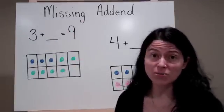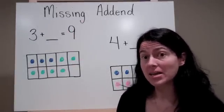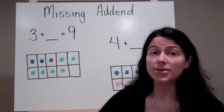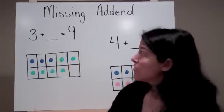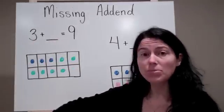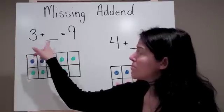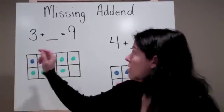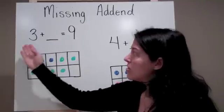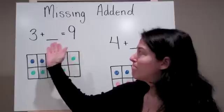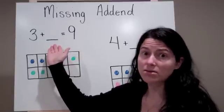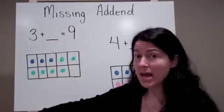The tens frame can also help us when we have a missing addend and we already know the sum of our equation. For example, I have this problem up here, this equation that says 3 plus what number equals 9. So I know one of the addends and I know the sum, but I don't know the other addend. So I have a missing addend.